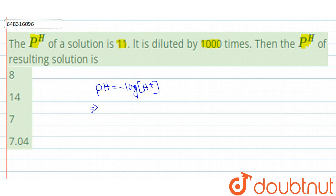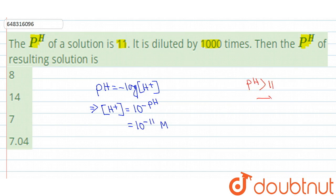So, concentration of H+, that will be 10 to the power minus pH value, so that means 10 to the power minus 11 molar. Here we can see that the pH value is greater than 11, so that means this is a basic solution.